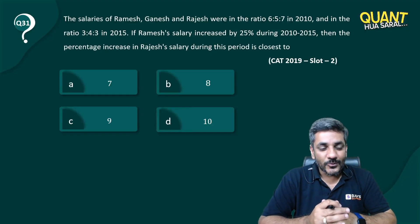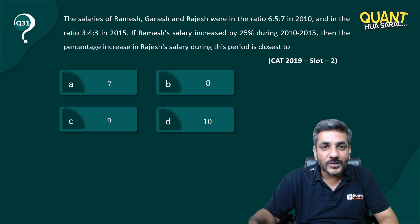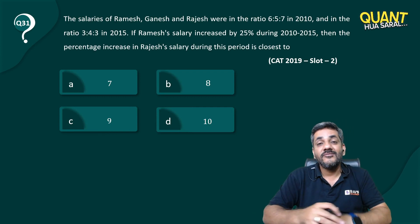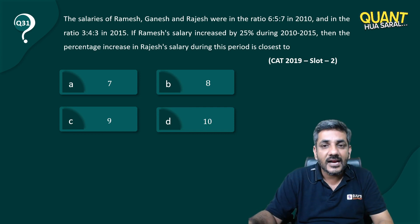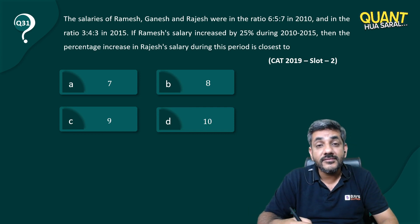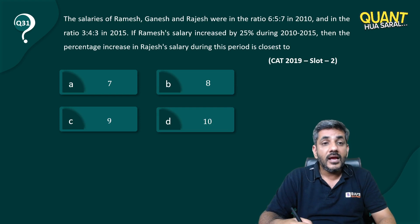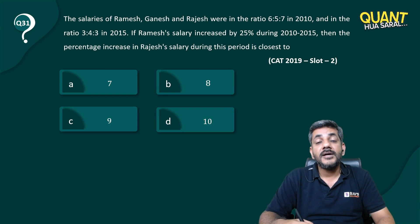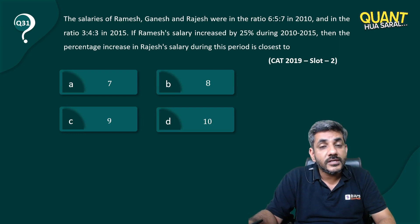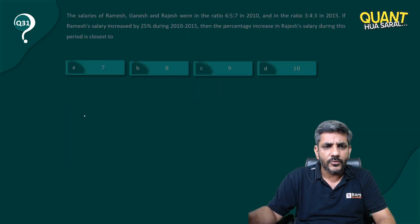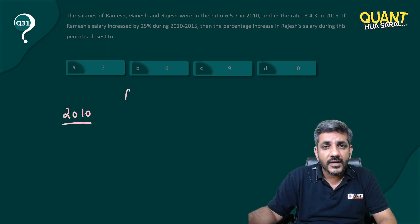Welcome back to the series. We have question number 31, once again from 2019 slot. The salaries of Ramesh, Ganesh, and Rajesh were in the ratio of 6:5:7 in 2010 and in the ratio of 3:4:3 in 2015. Ramesh's salary increased by 25 percent during this period. The percentage increase in Rajesh's salary during this period is closest to what?